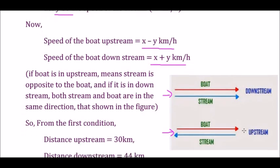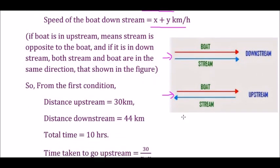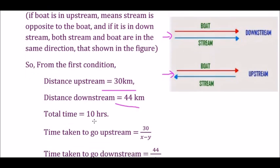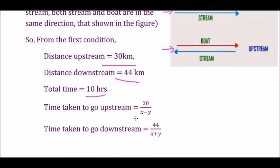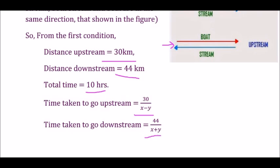From the first condition, the distance upstream is 30 kilometers, the distance downstream is 44 kilometers, and the total time is 10 hours. The time taken to go upstream is 30 divided by (X minus Y), and the time to go downstream is 44 divided by (X plus Y). Therefore we formulate the equation: 30/(X − Y) + 44/(X + Y) = 10.